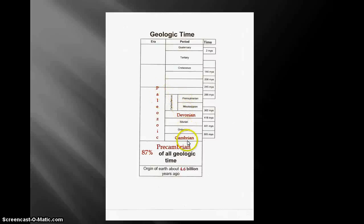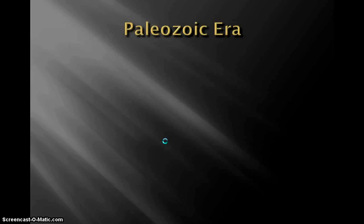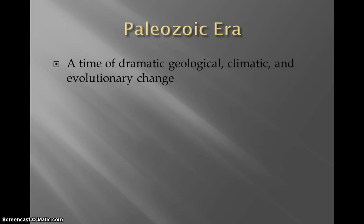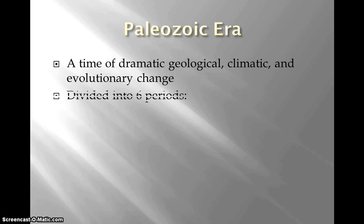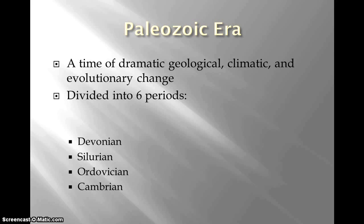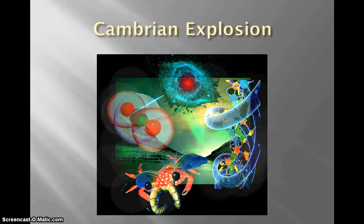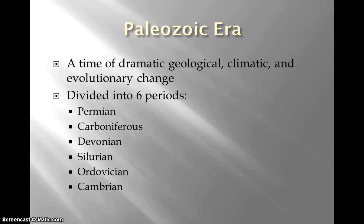Now we're going to the next part — the Paleozoic era. The periods are Cambrian, Ordovician, Silurian, Devonian, Mississippian, Pennsylvanian, Carboniferous. The Paleozoic era was a time of dramatic geological, climate, and evolutionary change. It's divided into six periods: Cambrian, Ordovician, Silurian, Devonian, Carboniferous, and Permian.